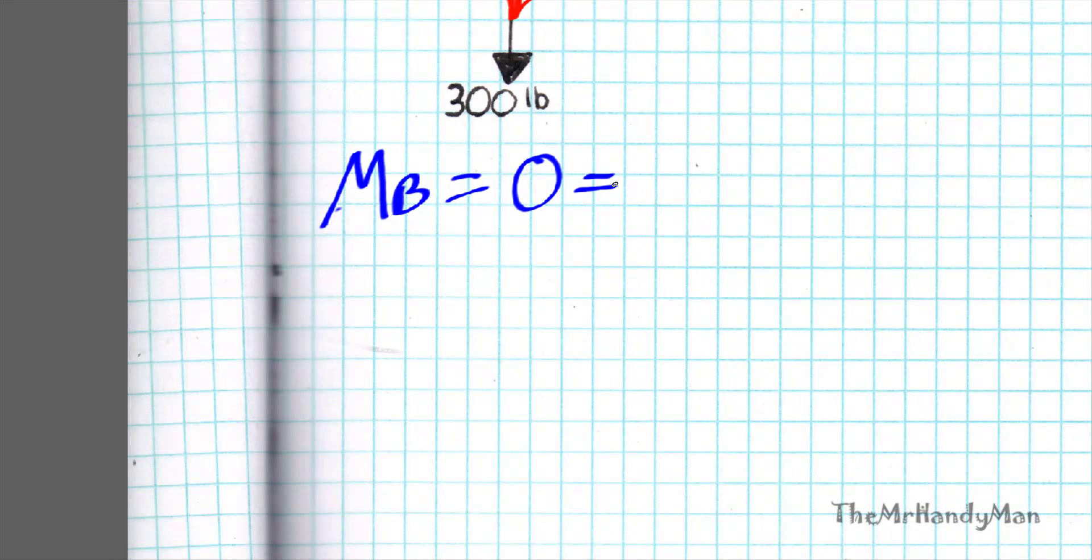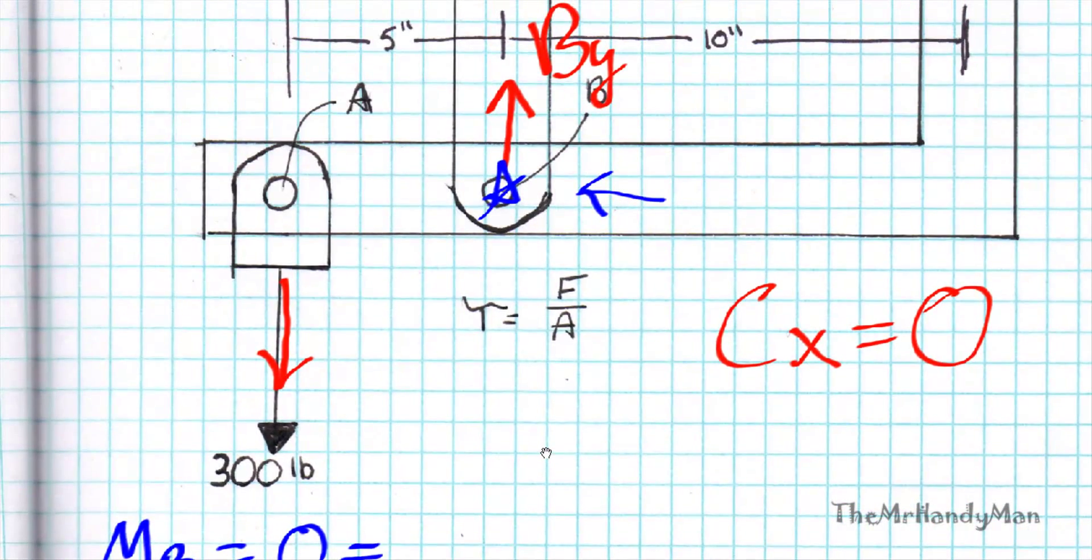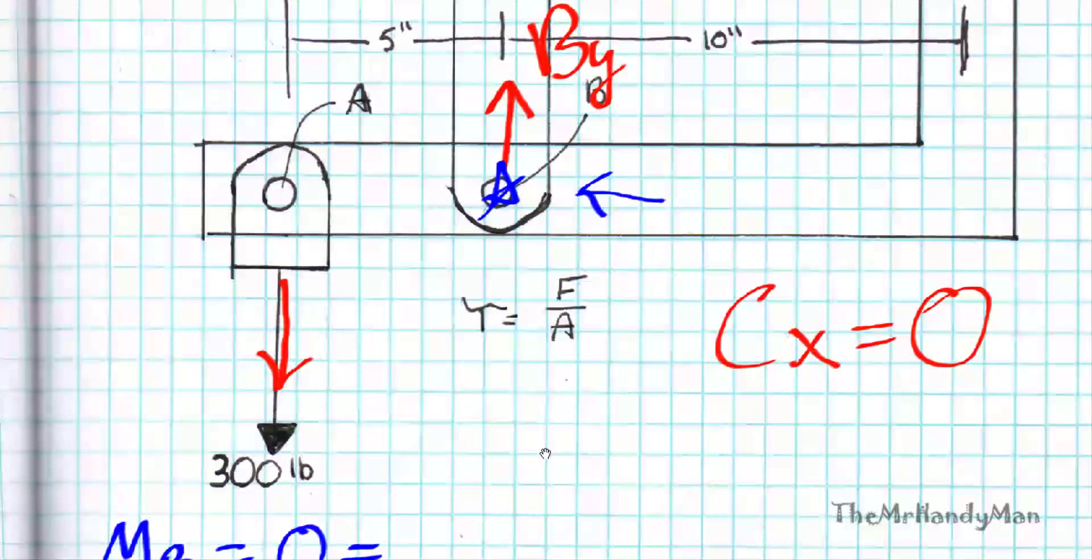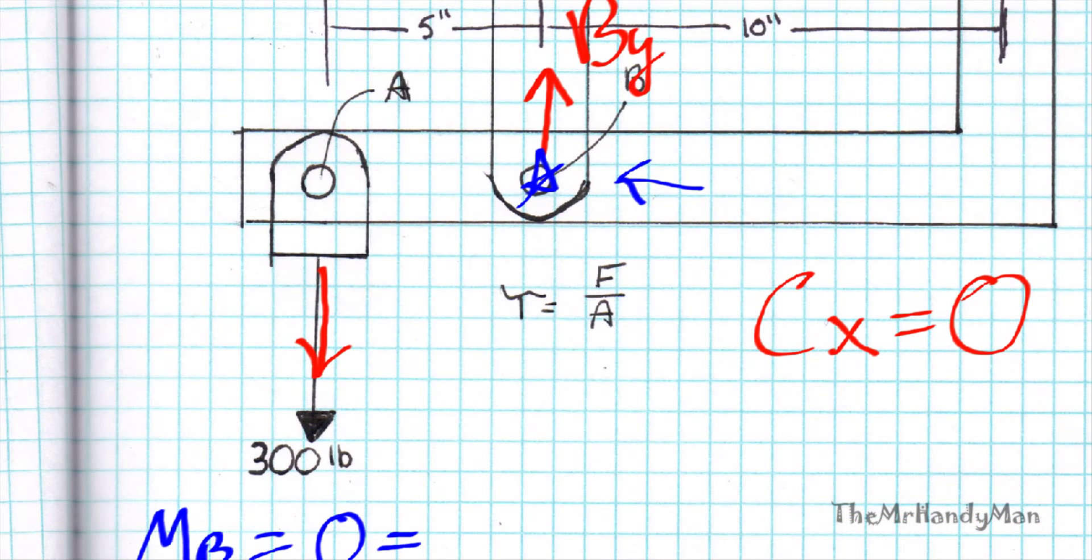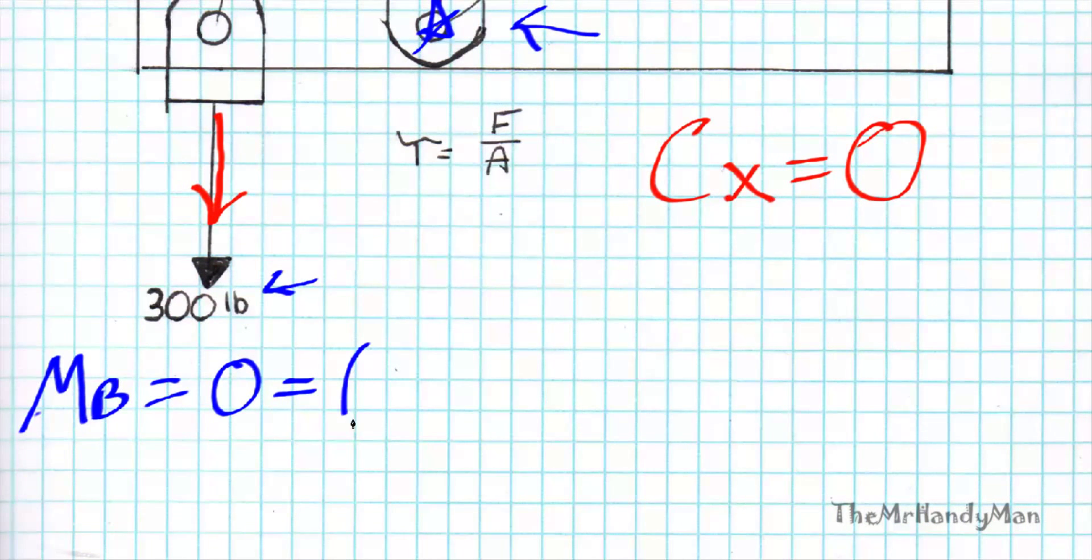And we know that it is 300 times 5, because we have our 300 pounds right here, and it's 5 inches away up at the top. So we can automatically write that in: 300 times 5.